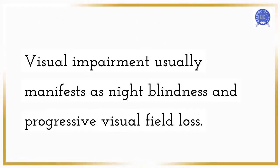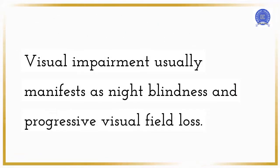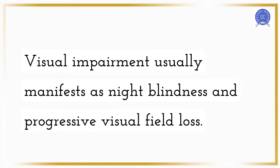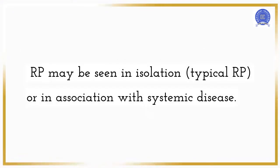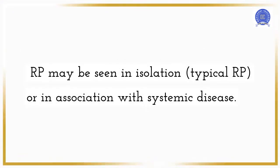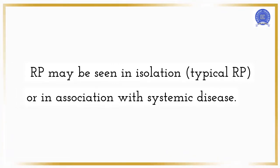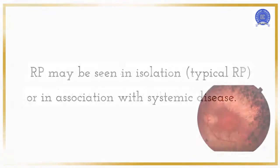Visual impairment usually manifests as night blindness and progressive visual field loss. RP may be seen in isolation or in association with systemic disease.